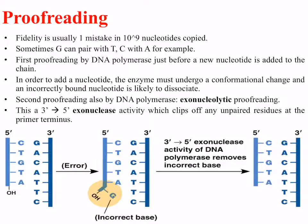The second proofreading is also by DNA polymerase and is called an exonucleolytic proofreading activity. This occurs in a 3' to 5' direction. The DNA polymerase synthesises in a 5' to 3' direction, but once it's passed the nucleotide just added, it can then go back in the other direction, re-read to make sure it has added the right base, and cleave off or clip off any unpaired residues that are not bound correctly or have weak binding capacity. This removes the incorrect base.